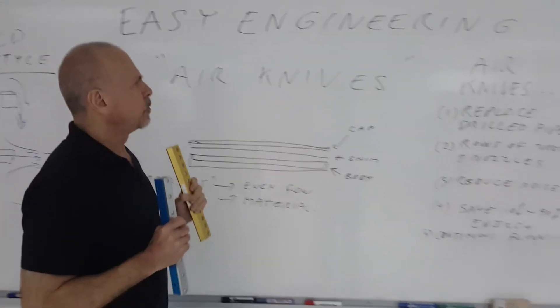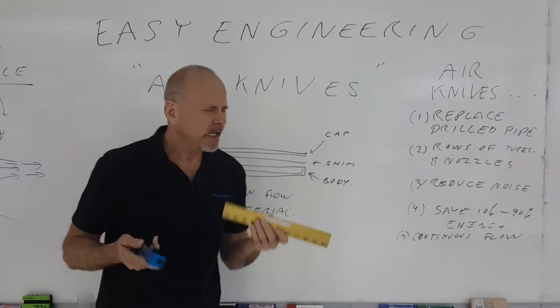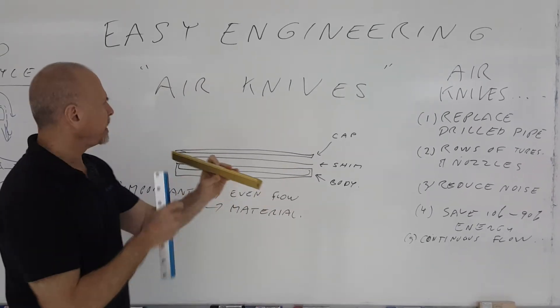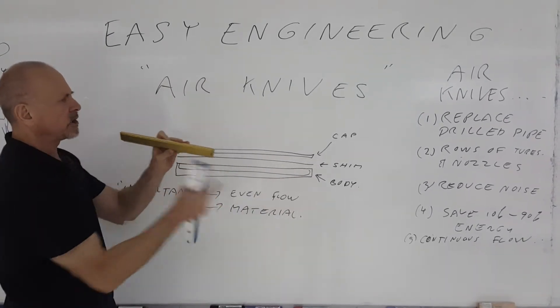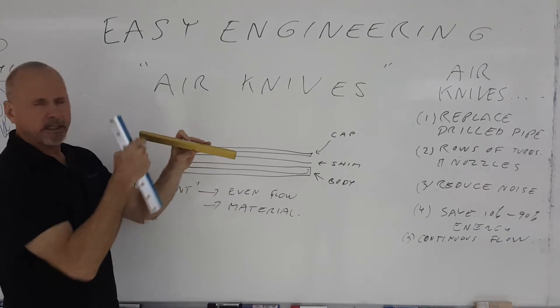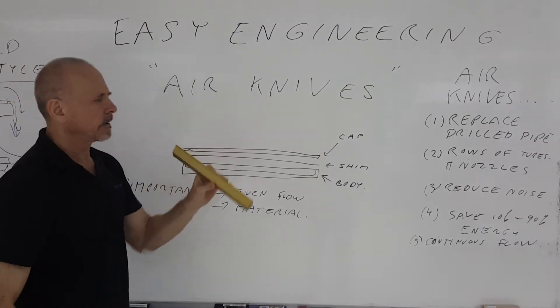Now, they look simple. An air knife looks really simple. It's a couple pieces, it's a cap, it's a body with a shim in between separating the two pieces to maintain the gap where the compressed air comes out.